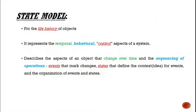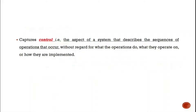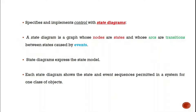The next model is the state model, which represents the life history of an object. It represents both the behavioral and control aspects of the system. It describes aspects of an object that change over time and the sequence of operations — capturing the control aspect of a system describing the sequence of operations that occur. The state diagram specifies and implements control. It is also a graph whose nodes are states and arcs are transitions between states caused by events, and the state diagram expresses the state model.